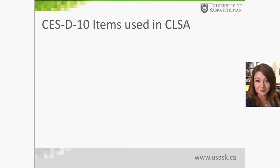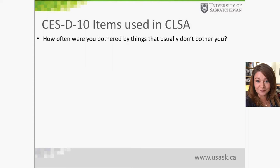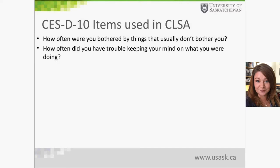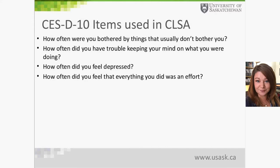So before I get into what we did and why we have more work to do, let me orient you to the CES-D 10. As mentioned in the title, it stands for the Center for Epidemiological Studies Depression Scale — this is the 10-item scale, derived from a longer 20-item scale. There is numerous evidence supporting its validity in terms of classification accuracy with clinically diagnosed major depressive disorder. It is a screening test that asks 10 questions, including: how often were you bothered by things that don't usually bother you, and how often did you have trouble keeping your mind on what you were doing.